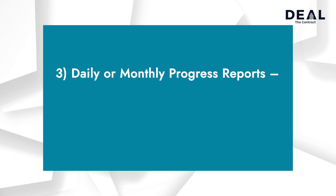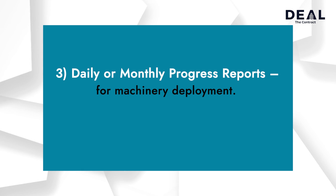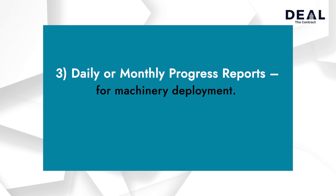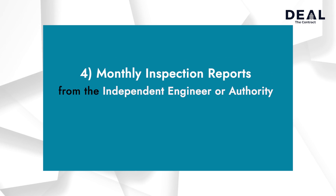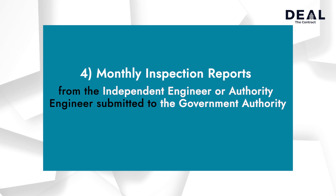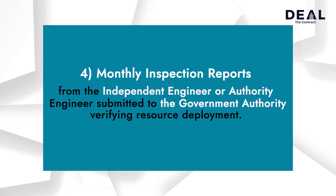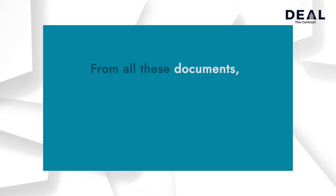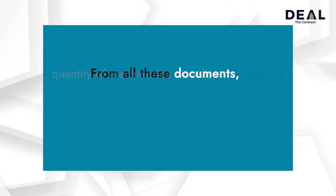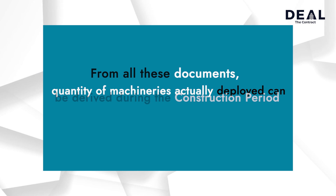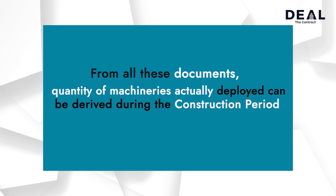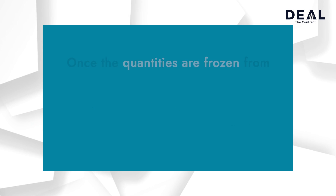3. Daily or monthly progress reports for machinery actual deployment. 4. Monthly inspection reports from the independent engineer or authority engineer, submitted to the government authority verifying resource deployment. From all these key documents, the quantity of machinery actually deployed can be derived during the construction period in terms of machinery months.